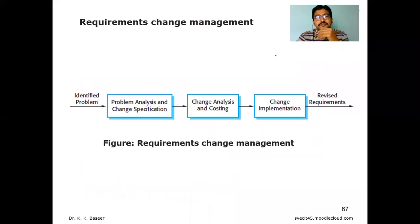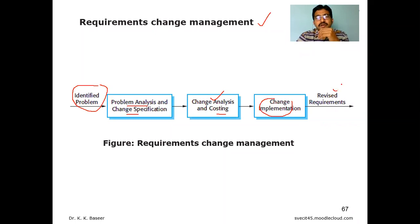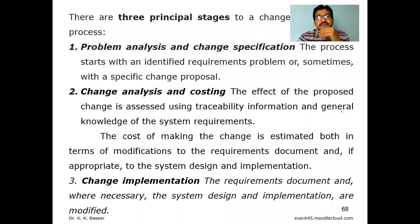The second sub-topic in requirements management is requirements change management. In change management, you first identify the problem, then analyze it, and check for any change of specification. If there is one, apply change analysis and check whether the cost is acceptable, then implement the change and release the revised requirement. Once the problem is identified, analyze the actual problem, see if any change in specification is needed, and if the cost impact is acceptable, implement the change and release the second version of the solution.